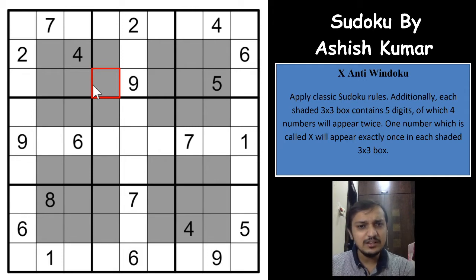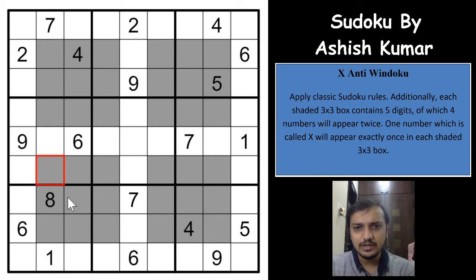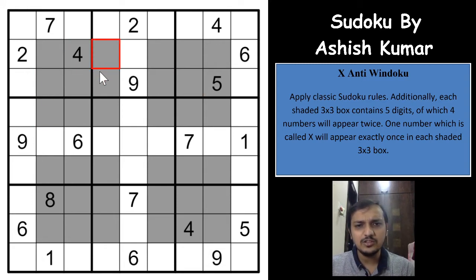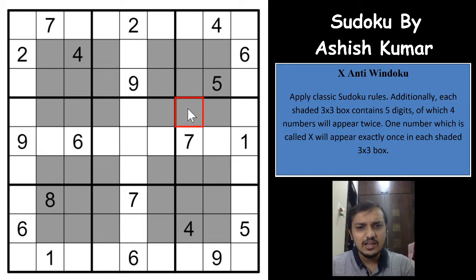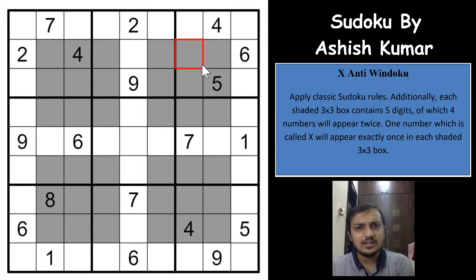The 1 digit that appears once will appear in all 4 windows exactly once. There will be 4 digits appearing twice in each window, giving you 8 cells, and 1 digit appearing once in each Windoku — that is called the X. So X is the same digit for all 4 Windokus.